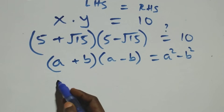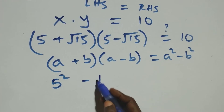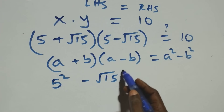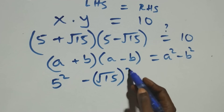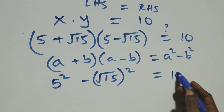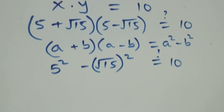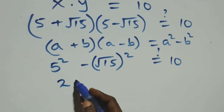We write this as five squared minus (root fifteen) squared. Is it equal to ten? Five squared is twenty-five, and (root fifteen) squared is fifteen.